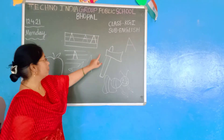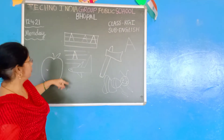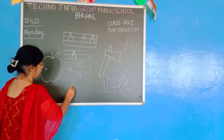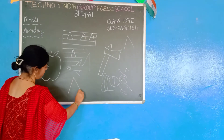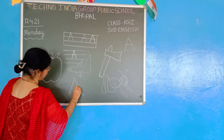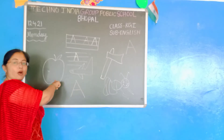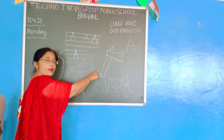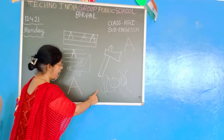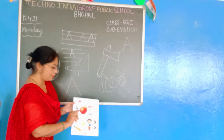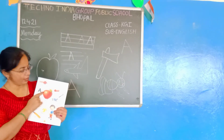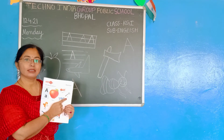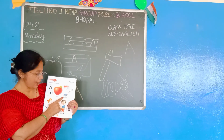Today we will do English writing. In English writing we will write A. A for apple. A for aeroplane. A for axe. A for ant. Now see the book here. A for apple, A for ant, A for axe, and A for aeroplane.